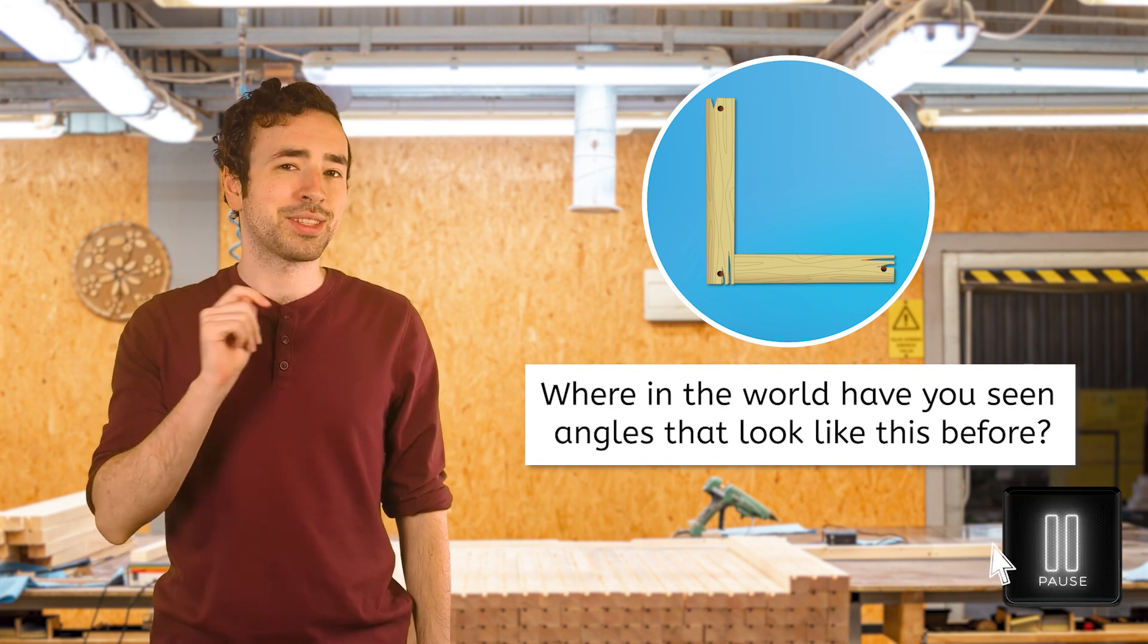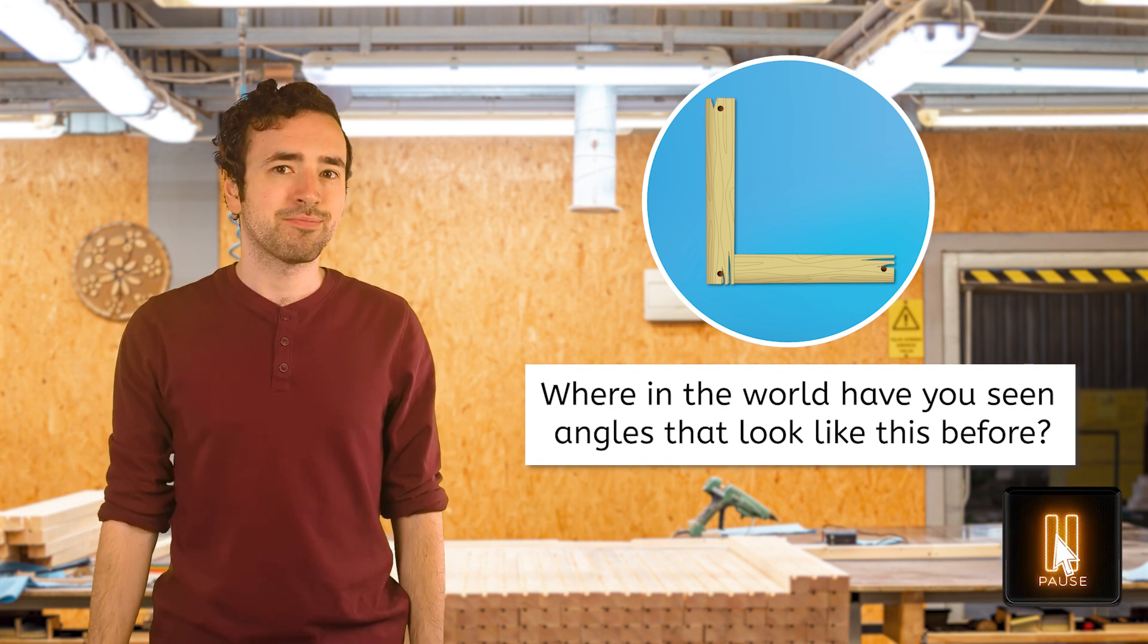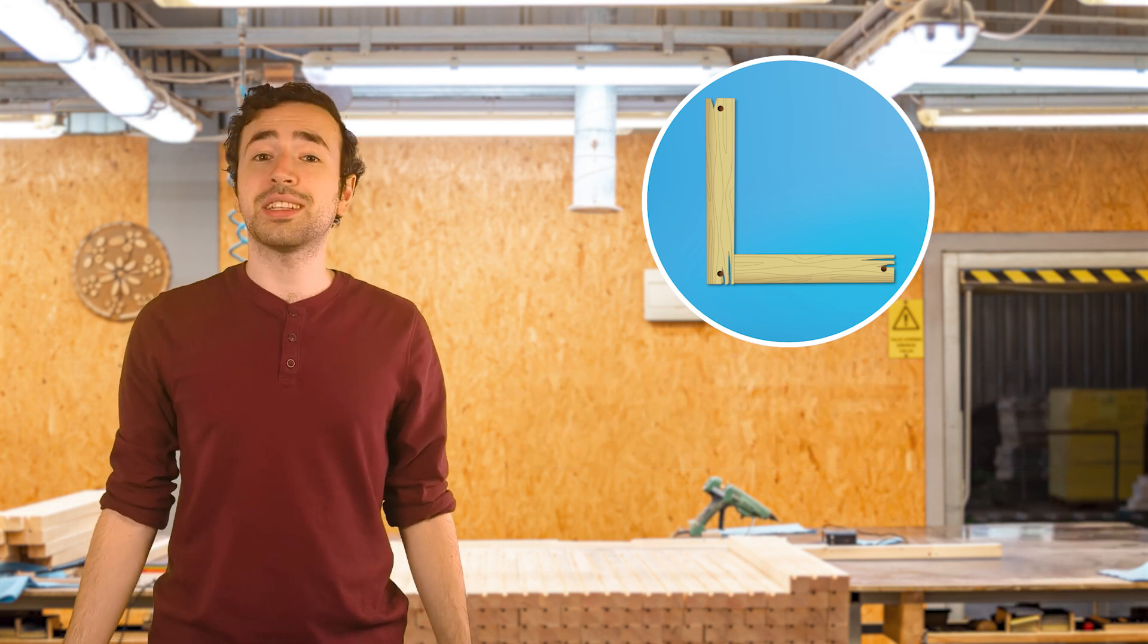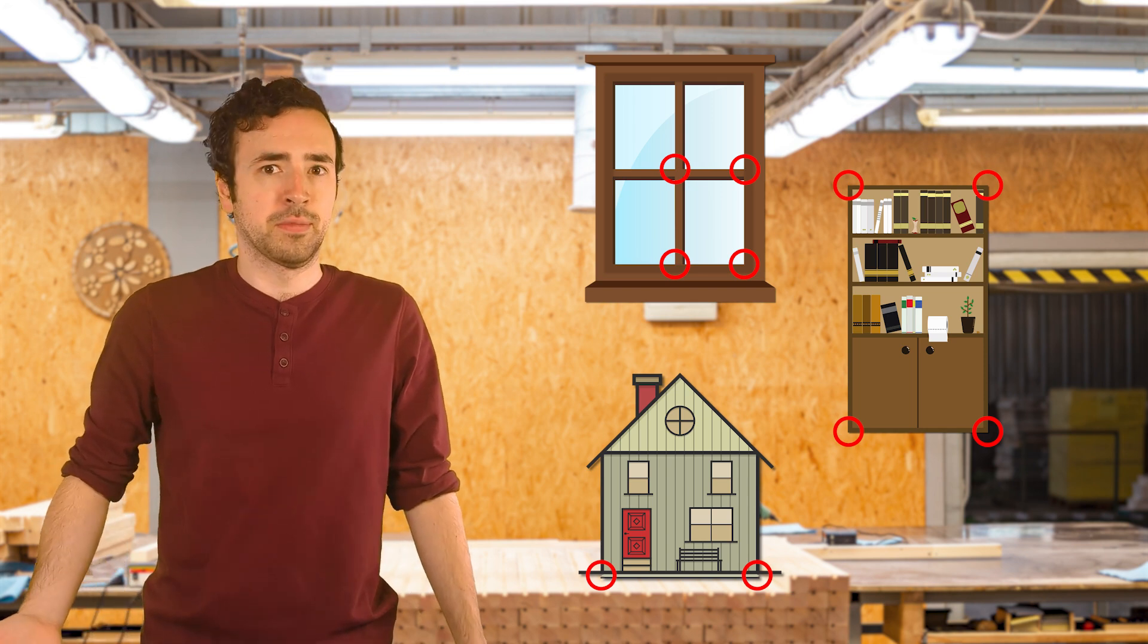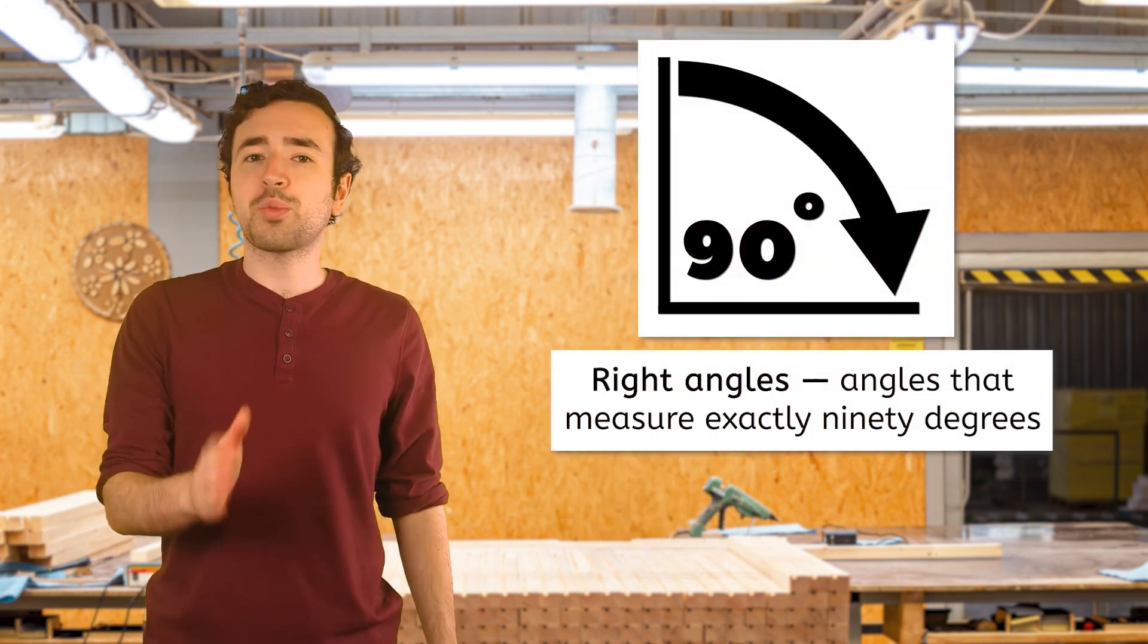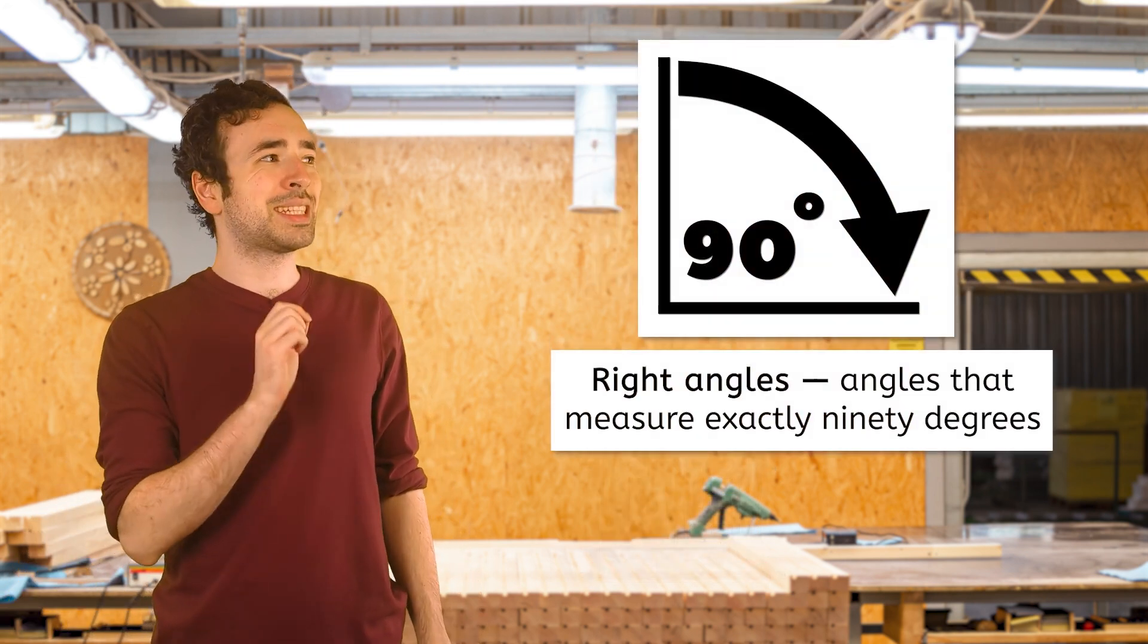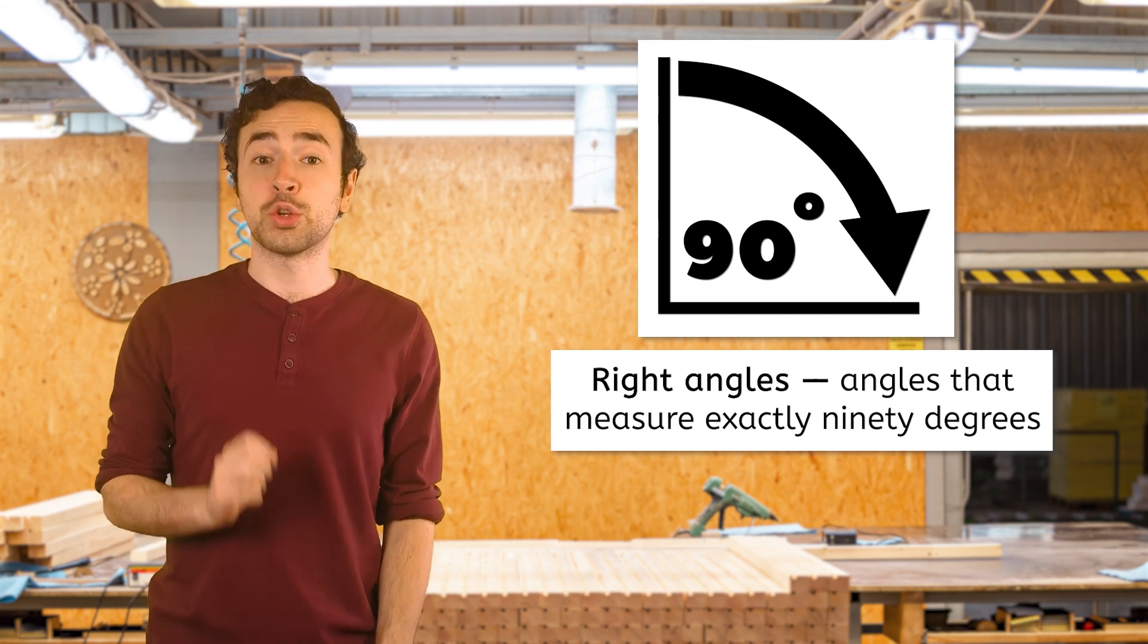Take a minute now and jot down a few ideas in your guided notes. You see these kinds of angles in squares and rectangles on windows, bookshelves, and even at the base of houses. These are right angles. Right angles form perfectly square corners, which make them great for providing strong and sturdy support in structures. Like my house. What makes right angles special is that they measure exactly 90 degrees.